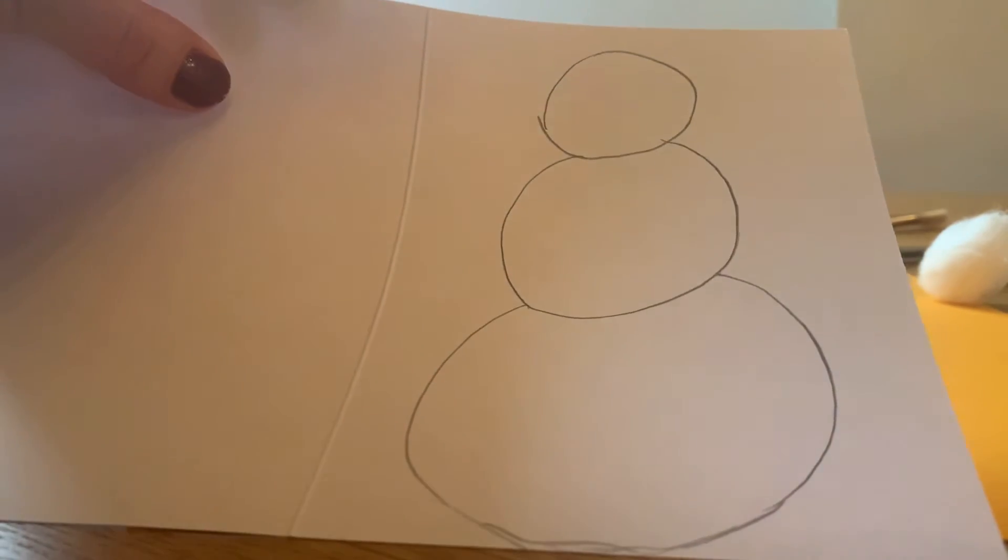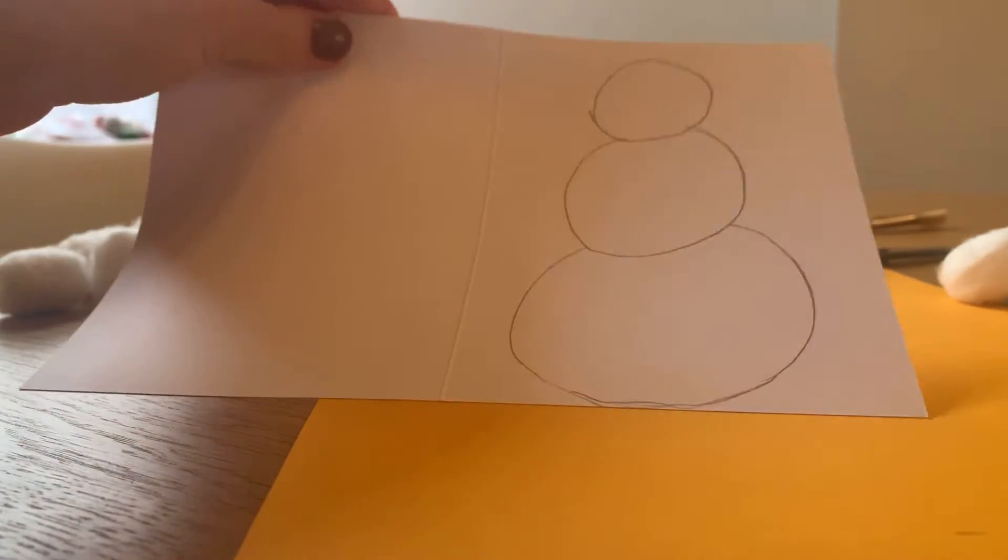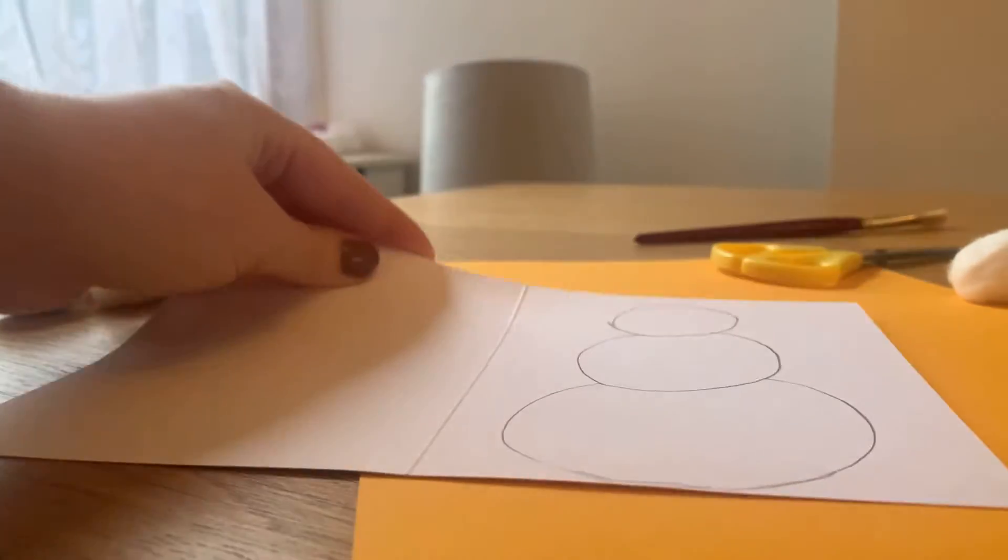Once you've drawn your three circles it should look something like this, and the next thing you have to do is cut them out carefully.